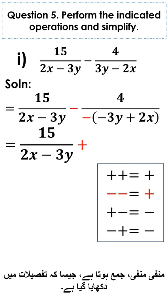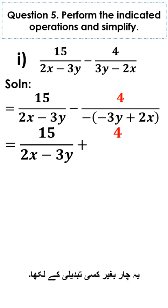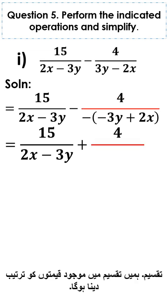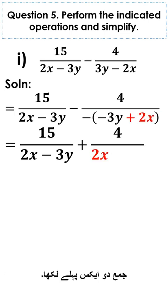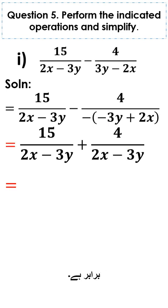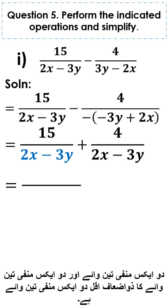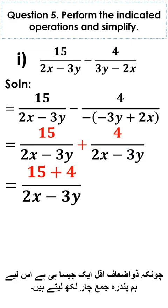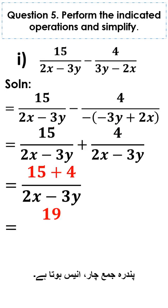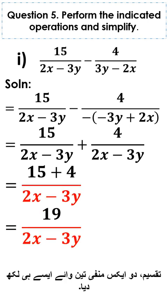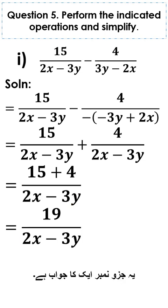This 4 is written without any change, divided by. We rearrange: plus 2x is written first, then minus 3y. The LCM of 2x minus 3y and 2x minus 3y is 2x minus 3y. Since LCM is the same, we write 15 plus 4, which is 19, divided by 2x minus 3y. This is the answer of part 1.